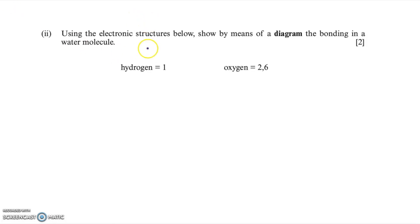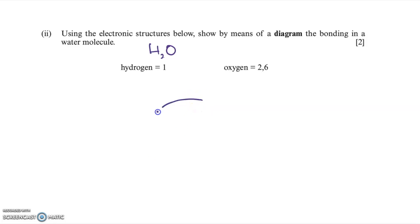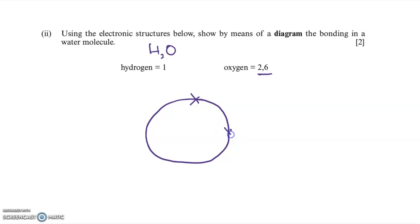In the second part of this question, I'm asked to draw a diagram to represent the bonding in water. Water is H₂O, made up of hydrogen and oxygen — both non-metals — so the bonding is covalent. In covalent bonding, atoms share electrons to gain full outer shells. I'm going to draw the oxygen atom first because there's only one oxygen and two hydrogens. Oxygen has six electrons in its outer shell, so I'm going to draw those six electrons.